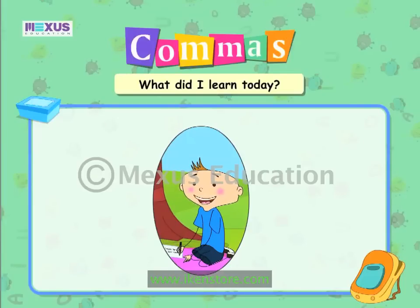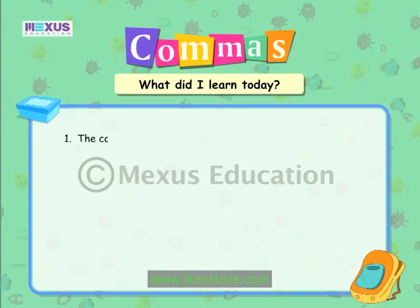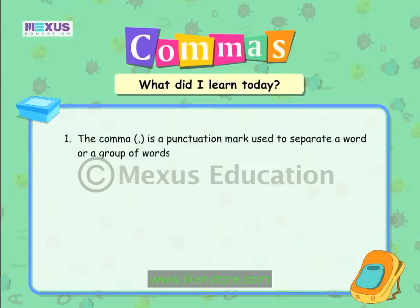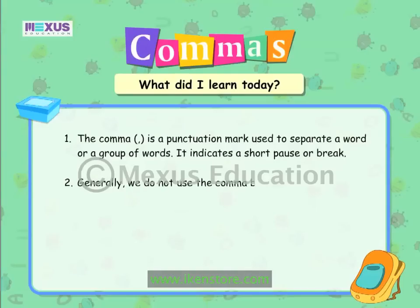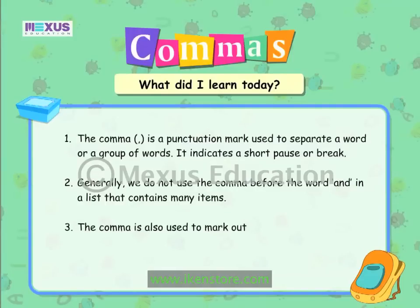Hello friends! Wasn't ZZ's picture really funny? Let's revise all that we have learnt in the lesson on commas. The comma is a punctuation mark commonly used to separate a word or a group of words. It indicates a short pause or break. Generally, we do not use the comma before the word 'and' in a list that contains many items. The comma is also used to mark out or separate the less important parts of a sentence.